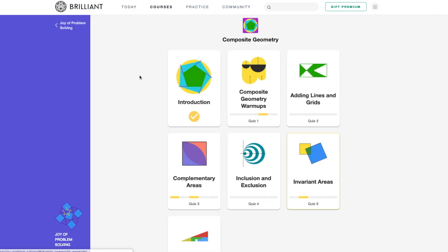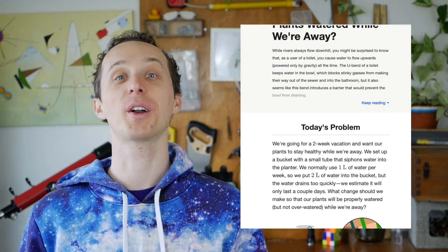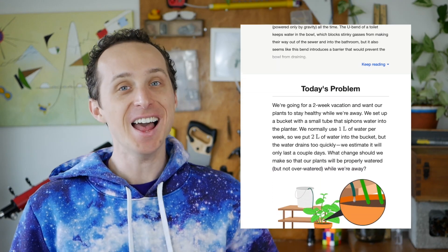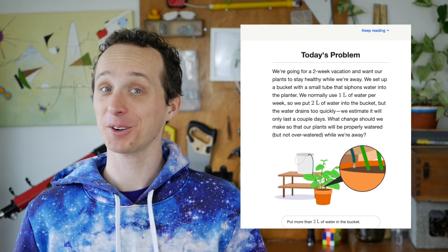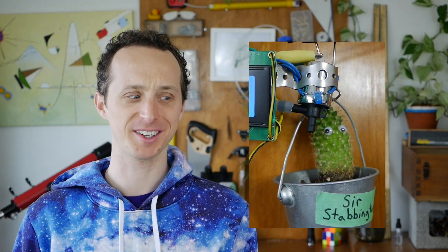And there's a recent daily problem on Brilliant that I really like about the physics of how to water your plants while you're away. And it turns out that there's a much simpler solution to that than building a robotic cactus watering machine like I did.